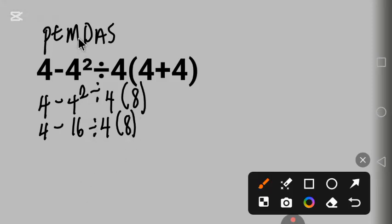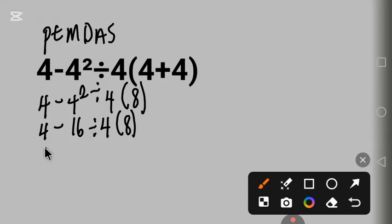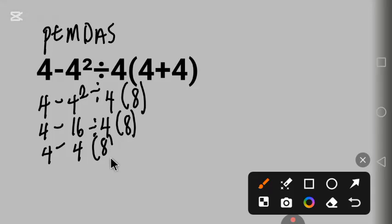Next is multiplication. Multiplication and division have the same order of priority, so we work from left to right. From the left, we have division first. We solve division: 16 divided by 4 is 4. Then 8 in parentheses.